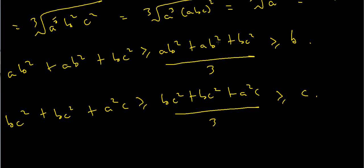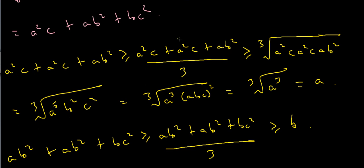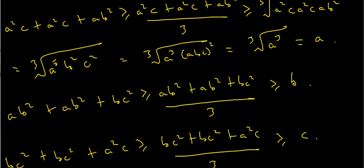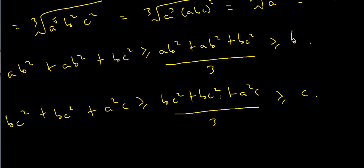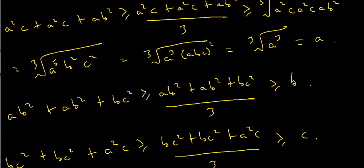Now I'm going to add these three inequalities, starting from the arithmetic mean expressions. When I add the three groups — A squared C plus A squared C plus AB squared over three, plus AB squared plus AB squared plus BC squared over three, plus BC squared plus BC squared plus A squared C over three — I notice that each term appears exactly three times: A squared C appears three times, AB squared appears three times, and BC squared appears three times. So each third adds up, and I'm left with A squared C plus AB squared plus BC squared.